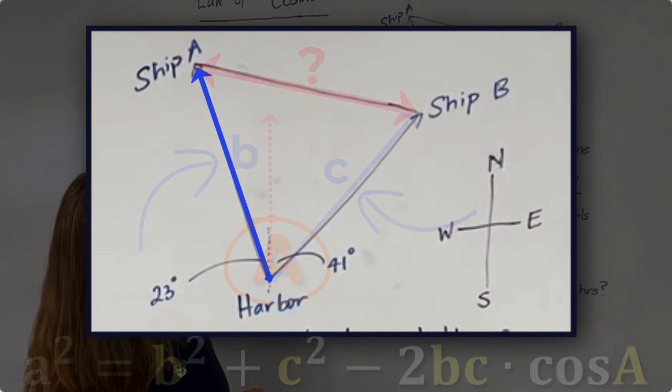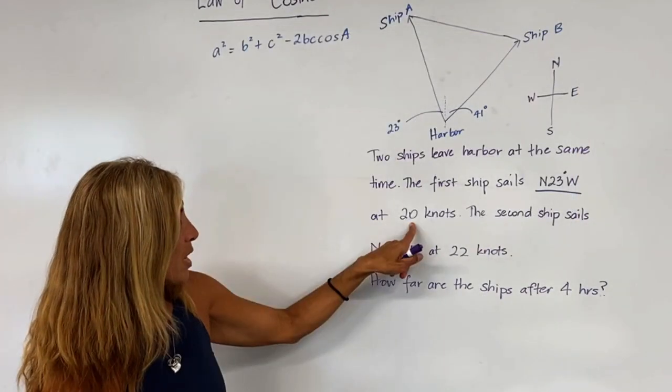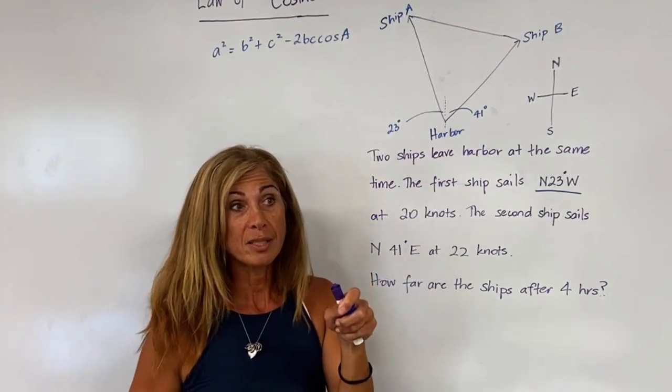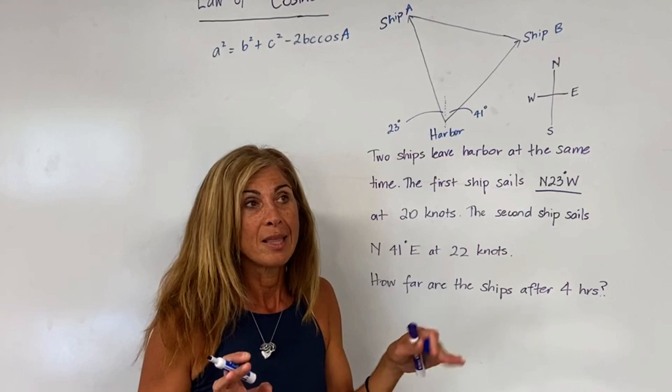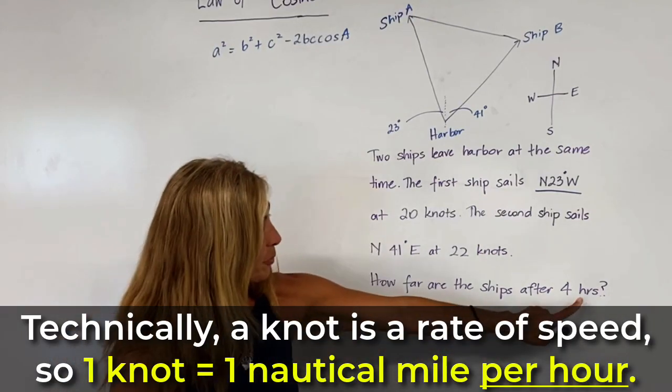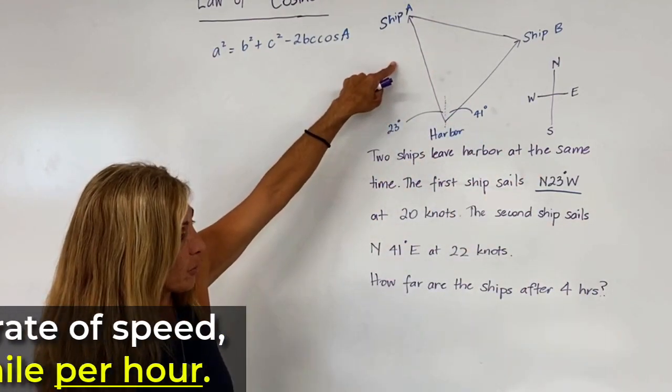So we need to figure out how far ship A has traveled. If we're traveling at 20 knots—and note, we're going to assume that a knot is one nautical mile—so after four hours, how far has ship A traveled?